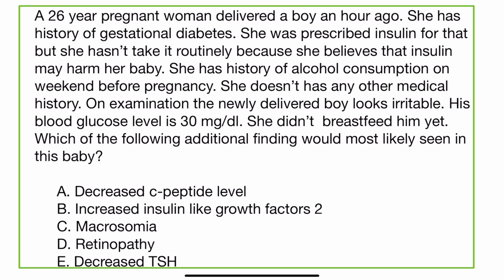A 26-year-old pregnant woman delivered a boy an hour ago. She has a history of gestational diabetes. She was prescribed insulin for that, but she hasn't taken it routinely because she believes that insulin may harm her baby. She has a history of alcohol consumption on weekends before the pregnancy.